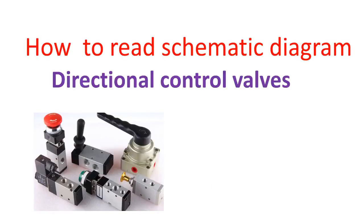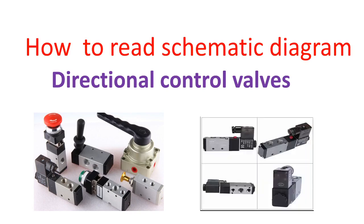Directional control valves perform only three functions: allow airflow, stop airflow, and change direction of airflow. One of the basic directional control valves is the two-way valve, which either stops flow or allows flow. A garden faucet is a good example.